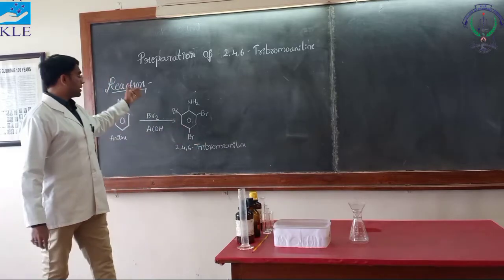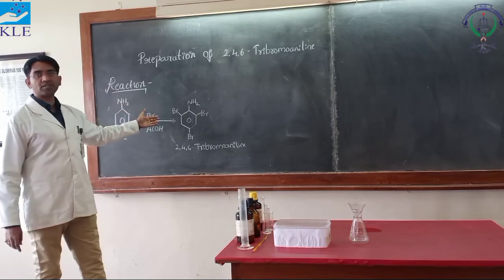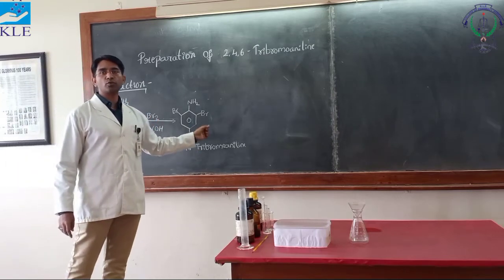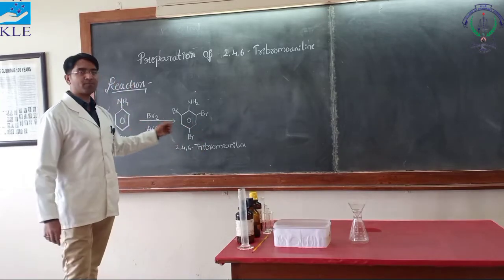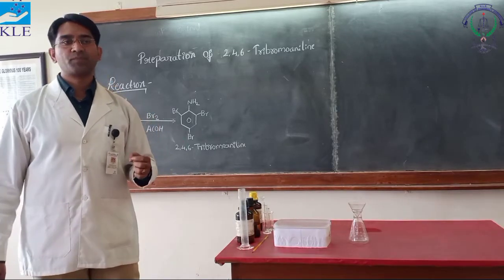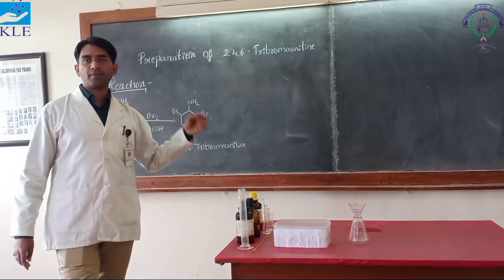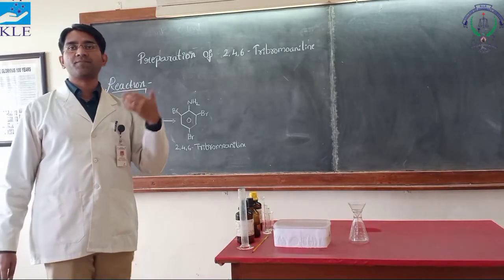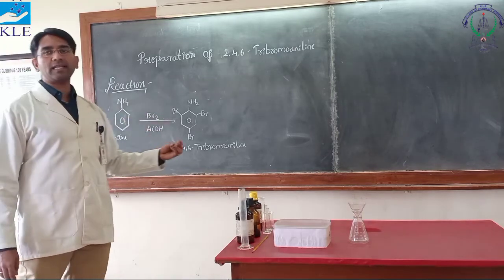This is a simple substitution reaction whereby aniline undergoes a reaction with bromine in the presence of glacial acetic acid to give the product 2,4,6-tribromoaniline. This compound is used in organic synthesis where pharmaceutical products, agrochemical products, or fire extinguishing reagents are prepared.